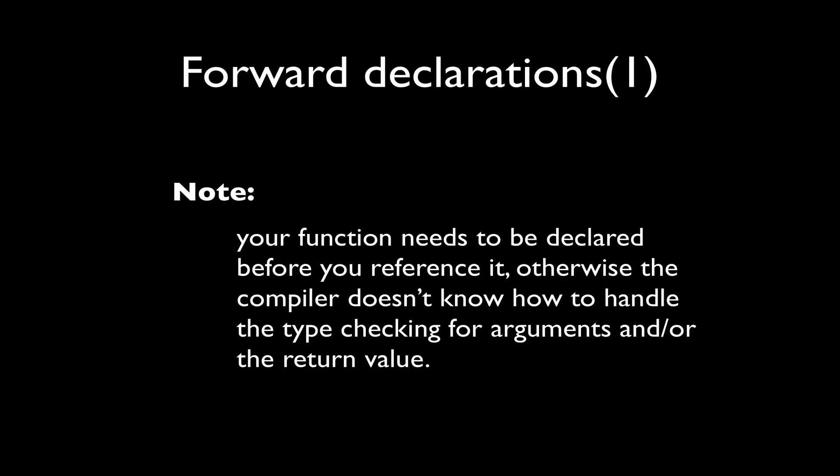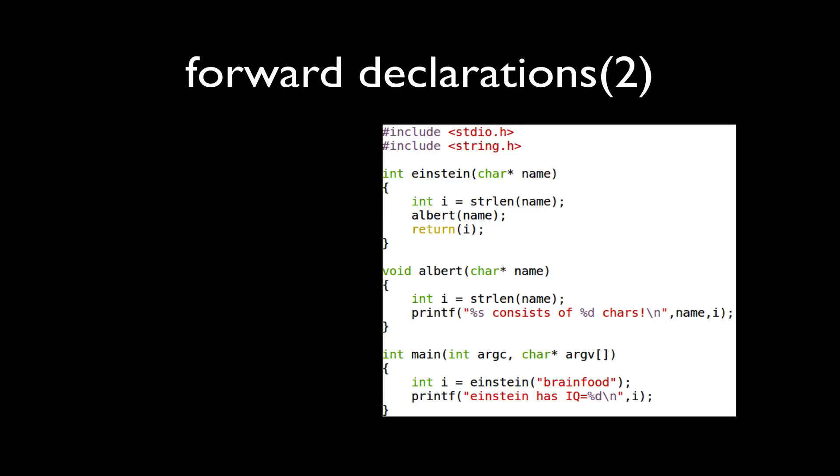Another thing we've already mentioned is that our functions need to be declared before we reference it. Otherwise the compiler doesn't know how to handle the type checking for the arguments as well as that return value. In this example we have a function named Albert which is called by Einstein, the function Einstein, before it is defined.